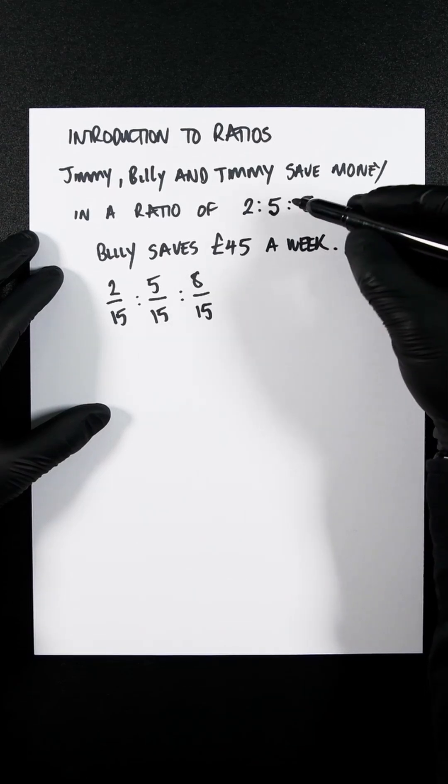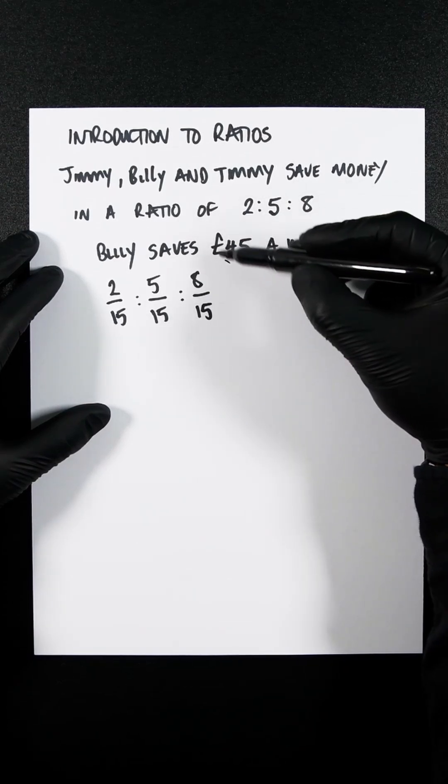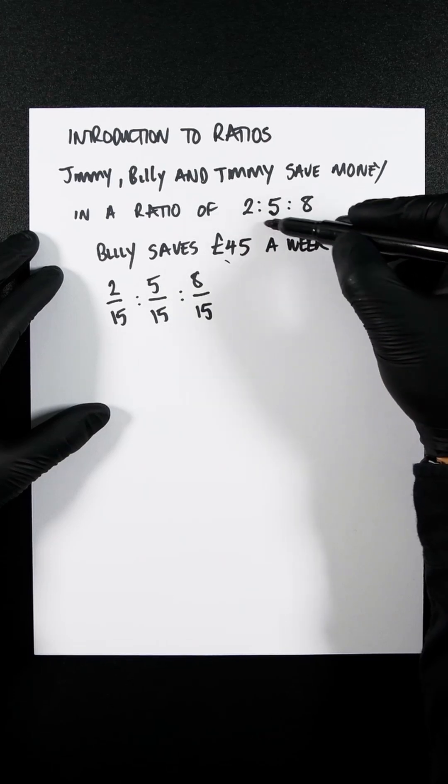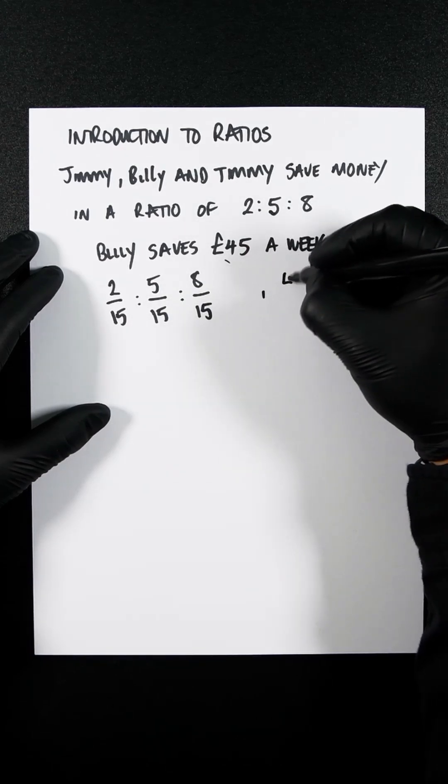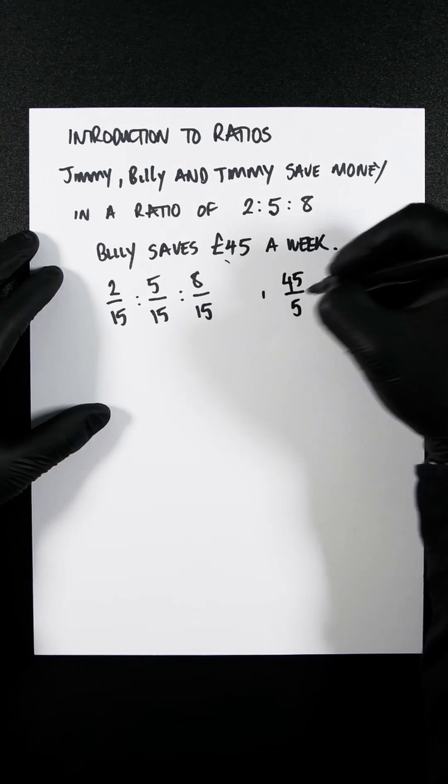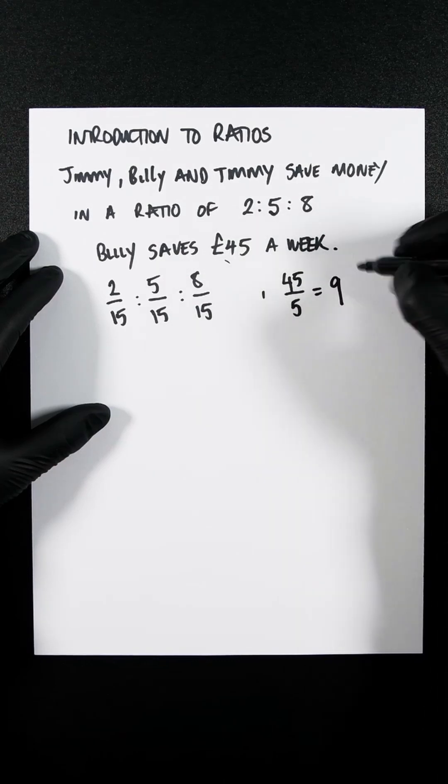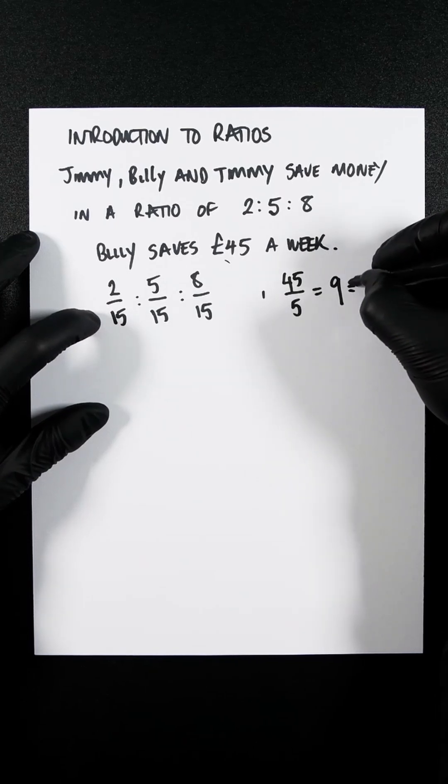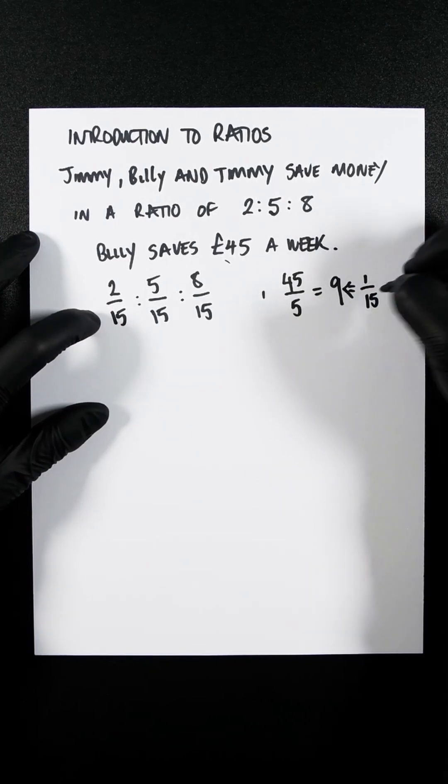So that means if we now take Billy's saving per week, 45 pounds, and divide it by 5, you're going to get 45 divided by 5, which is 9. So that is what 1/15th would equal. So this here is the equivalent of 1/15th.